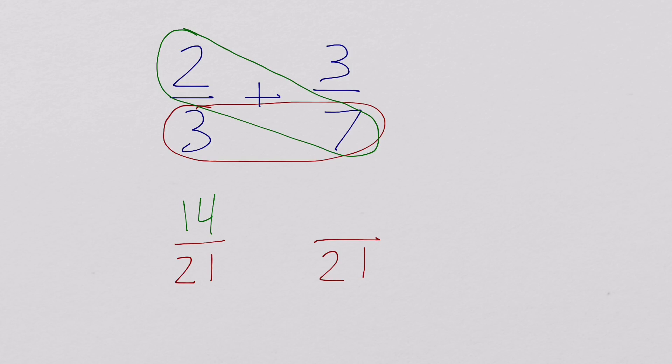Now, for the other side, we cross again for 3 times 3. And since I used the numerator on this side, we put the 9 over here.